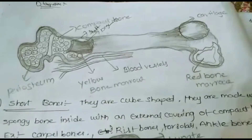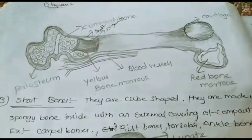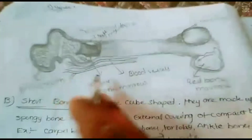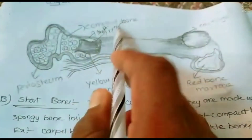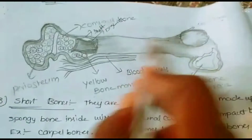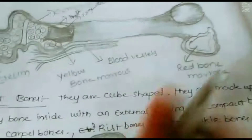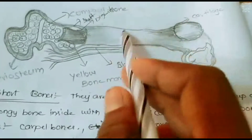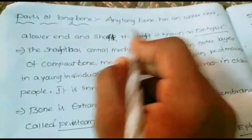Now we will see each and every part of the bone in detail. Looking at this bone, we can see the periosteum, yellow bone marrow, blood vessels, compact bone, and the shaft. Here we also see the red bone marrow and the cartilage on the surface of the bone.